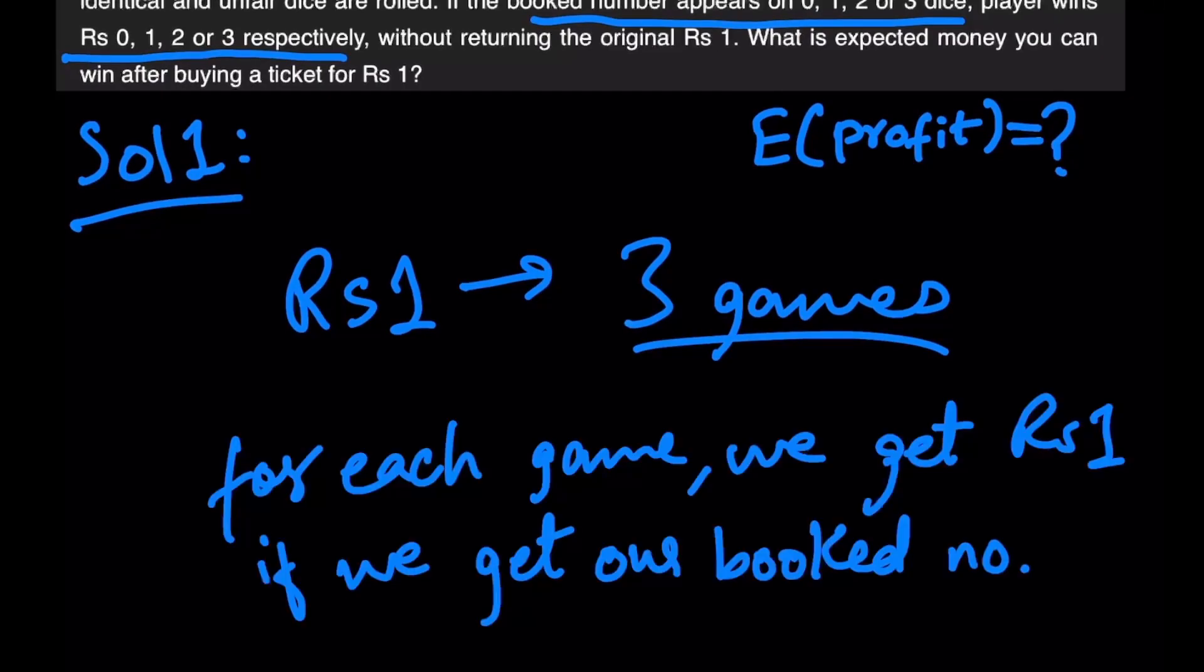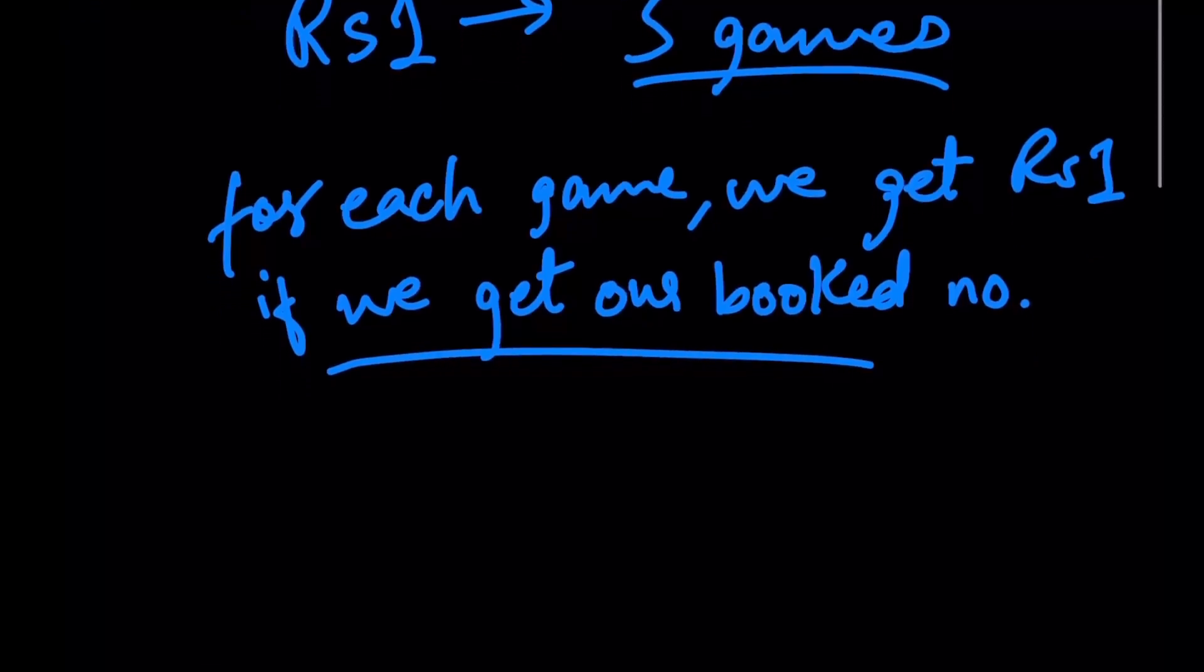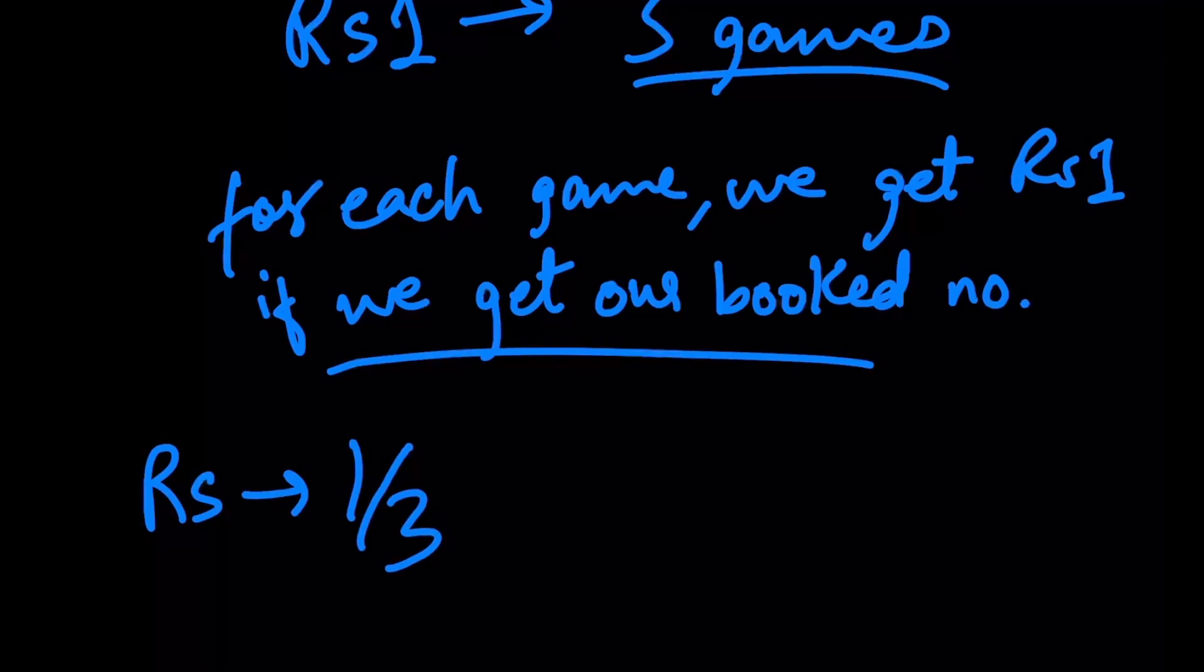And since there's three games, if you think about it, basically what's happening is for each game we get one rupee if we get our booked number, right? Since it's given in the question in a slightly complicated manner, it says that we first roll the dice three times and depending on the total number of times we get our booked number, we are given these respective amounts. But what is essentially happening is every time we get the booked number, we get an additional one rupee. And since all of the three games are completely identical, I could say that we're actually playing 1/3 rupee to play a single game where we win 1 rupee if we get our booked number and we win 0 rupees if we get anything else.